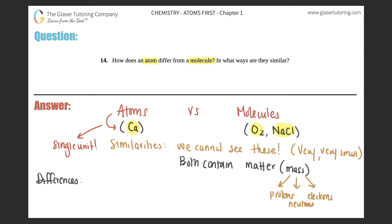So the differences is atoms contain a single unit—only one calcium, only one lithium, only one carbon. Molecules can have multiple atoms coming together. Now it doesn't have to be of the same element. It could be different. For example, O2 versus NaCl. O2 is two oxygens versus NaCl, which is one sodium and one chlorine.